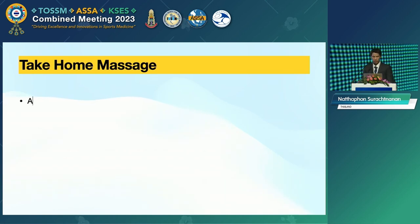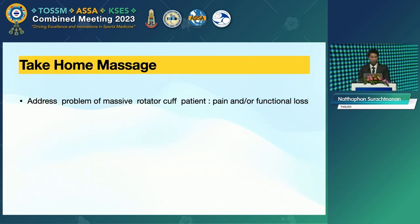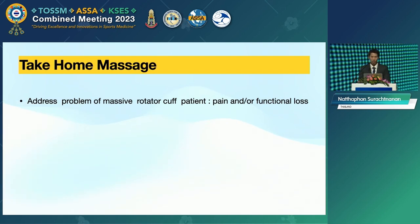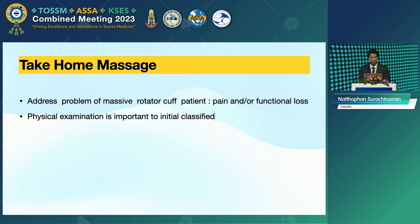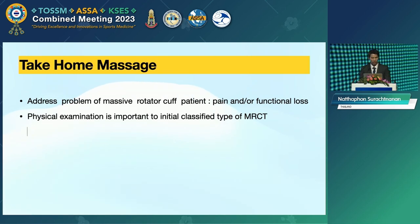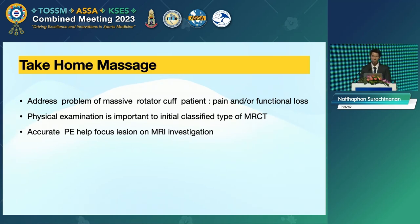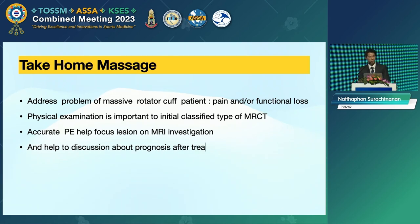Take-home message: address the problem of the massive rotator cuff tear patient — either pain or functional loss. Physical examination is important to classify the type of massive rotator cuff tear. Accurate physical examination helps to focus the lesion on the MRI investigation and is helpful in discussion about the prognosis after treatment or surgery.